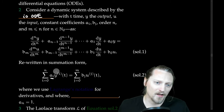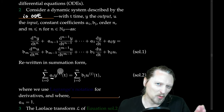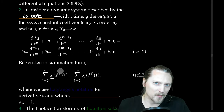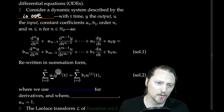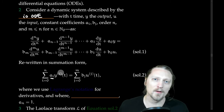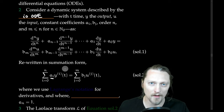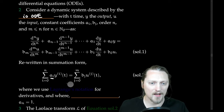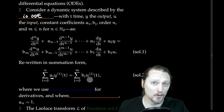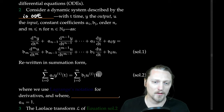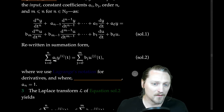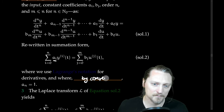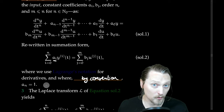Lagrange's notation begins with primes, and then as you go to higher orders and run out of reasonable prime notation, you switch over to the parenthetical number, which denotes the order of the derivative. So you have the sum of derivatives in Y on the left-hand side and the sum of derivatives in U on the right-hand side. By convention, a_N is just unity.